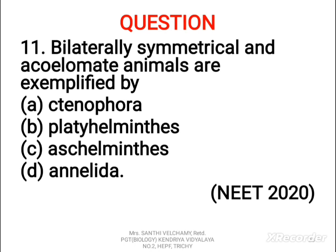Next question: bilaterally symmetrical and acoelomate animals are exemplified by A) Ctenophora, B) Platyhelminthes, C) Aschelminthes, D) Annelida. The correct answer is B, Platyhelminthes. Platyhelminthes are bilaterally symmetrical organisms. They show triploblastic — three-layered in embryonic stage — and acoelomate animals with organ level of organization.